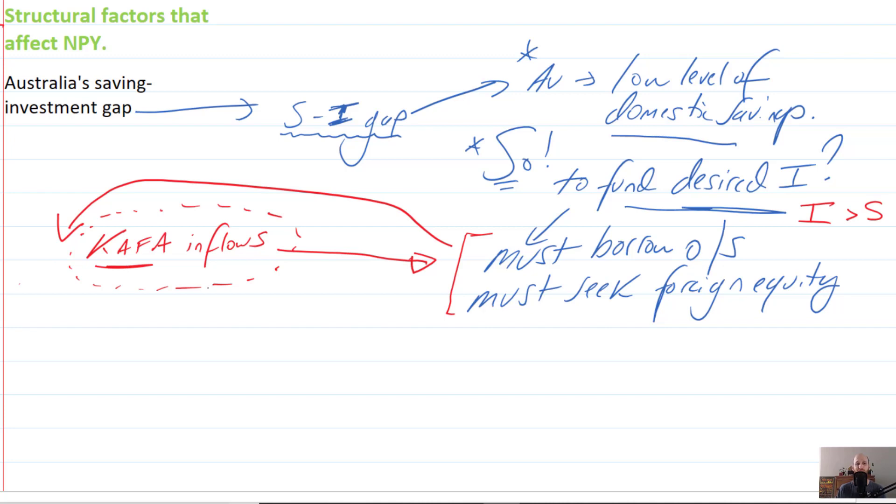So the way I'd encourage you to think about it is that these kinds of things are inflows to the capital and financial account - more specifically to the financial account, but to the capital and financial account. And we know that inflows onto the capital and financial account will create outflows on the current account.